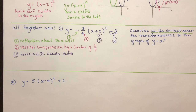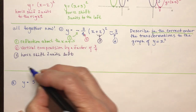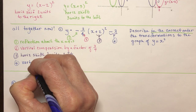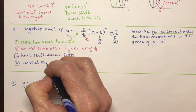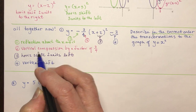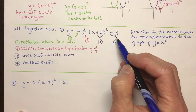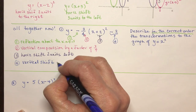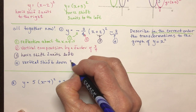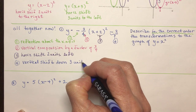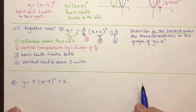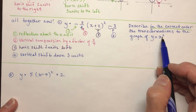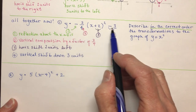And the last transformation — the number outside — is vertical. Anything outside the bracket is vertical. So that's a vertical shift, and since it's negative it's vertical shift down 3 units. And that's a perfect description of all the transformations that have happened to the graph of y equals x squared to get this function.